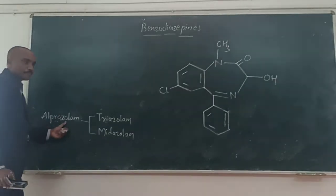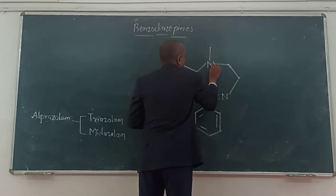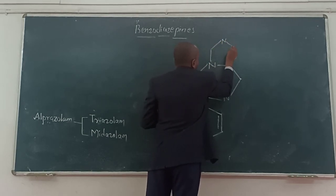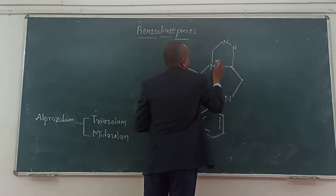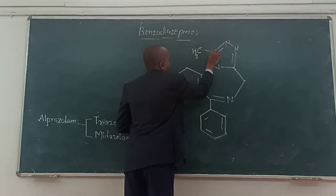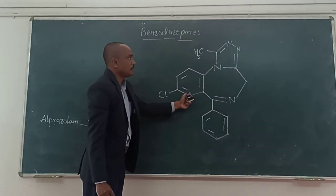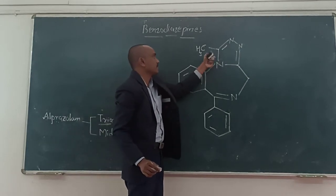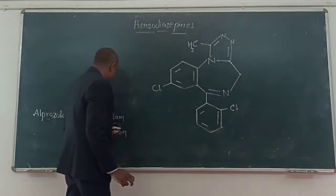The other series is the triazolam series. Starting from the diazepam basic structure, we replace the methyl group with a triazole ring, which contains three nitrogens. The triazole ring also contains a methyl group. This gives us alprazolam. From alprazolam, we can prepare triazolam — the triazole ring remains as is, and we add one more chlorine atom at the second position, giving us the structure for triazolam.